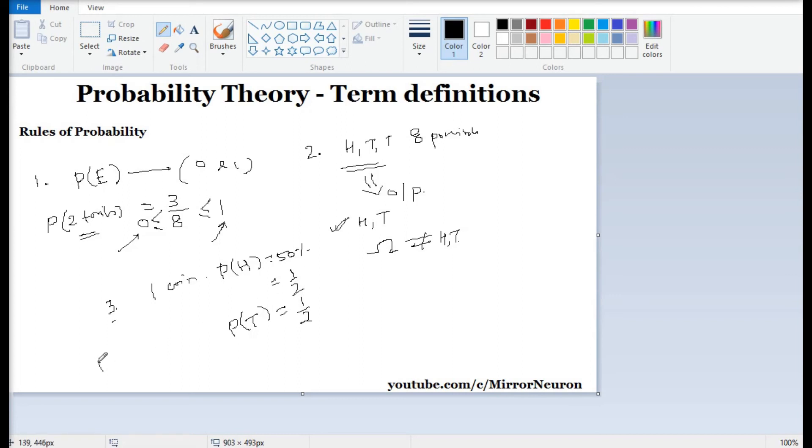What I mean to say is, what is the probability of you getting head or a tail is nothing but the probability of getting a head plus probability of getting a tail. That means half plus half equal to 1. I hope this definition is clear.